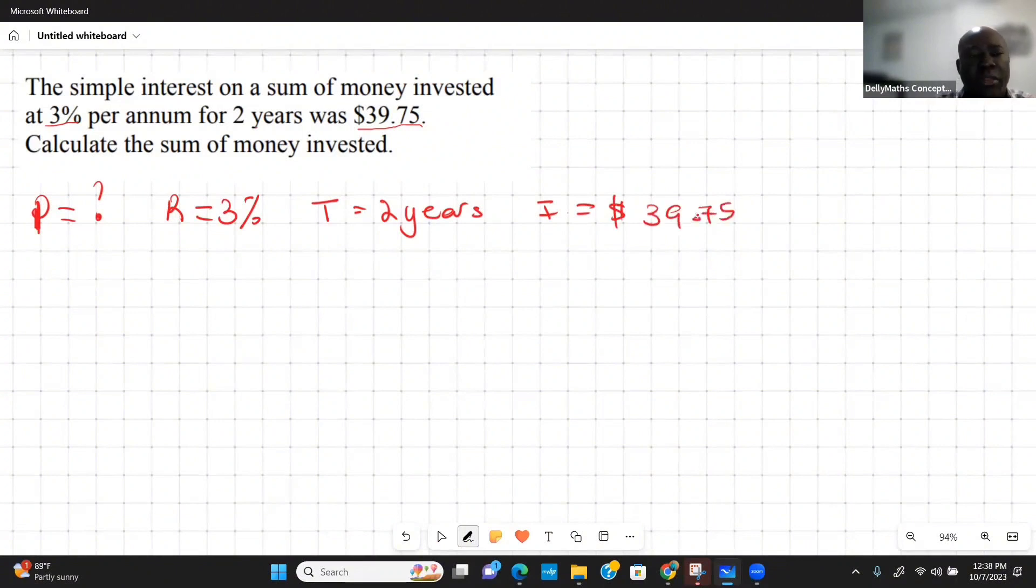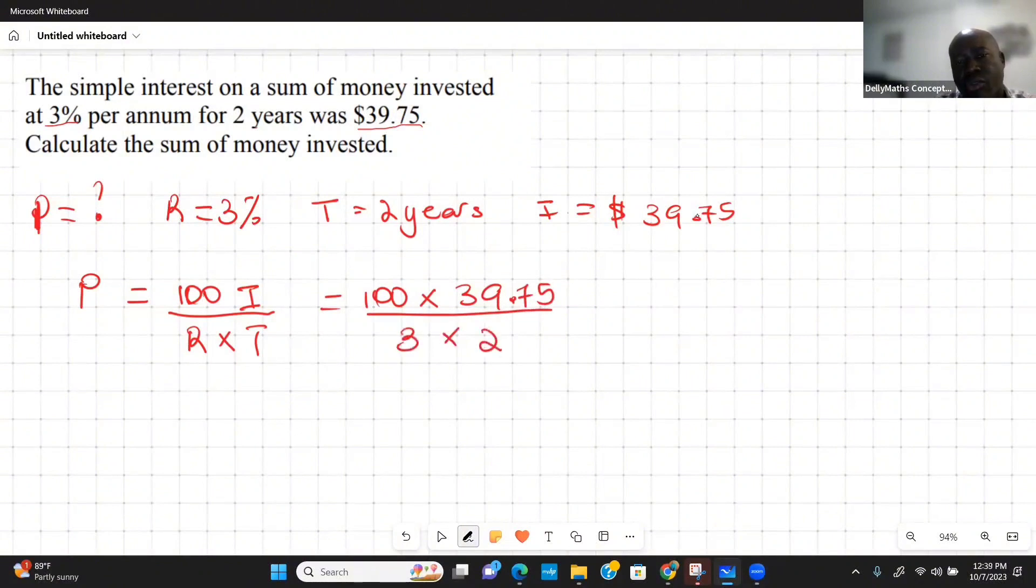With this, we're going to simply use the formula to find the principal, which is 100 times the interest all over the rate times the time. So in this case, 100 times the interest which is $39.75, we want to divide this by the rate which is 3 times the time which is 2.